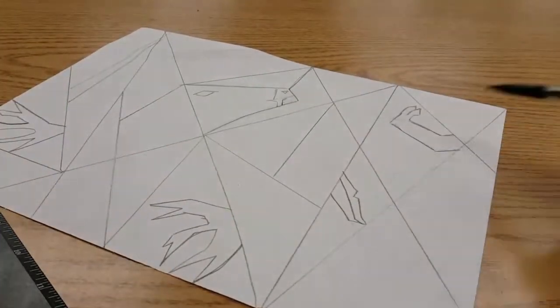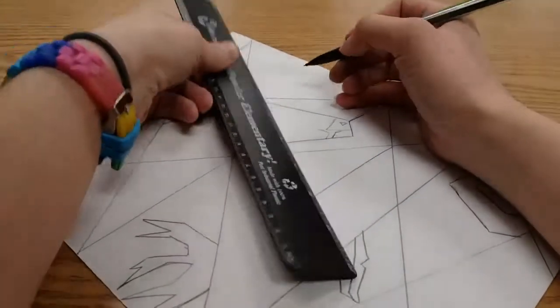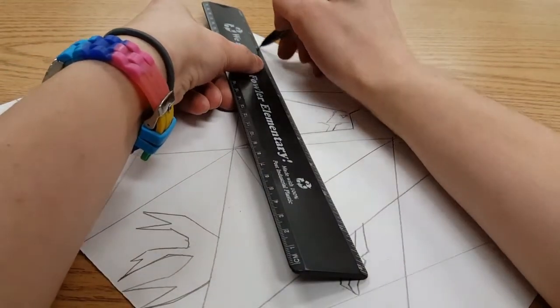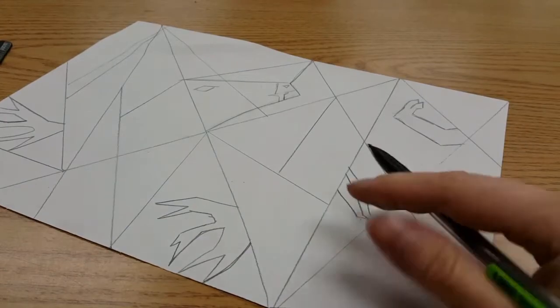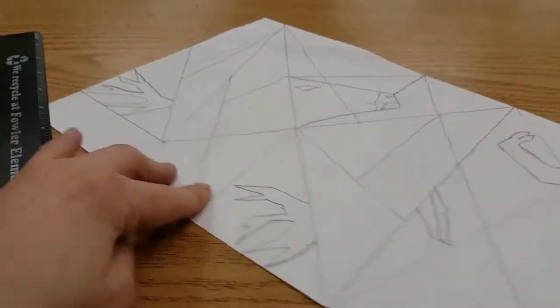Once you've got your animal parts drawn on, you may want to break things up just a little bit more to make it more confusing. Like I put a line through my animal's head and I can do that in other areas if I wanted to.